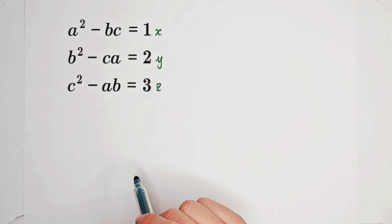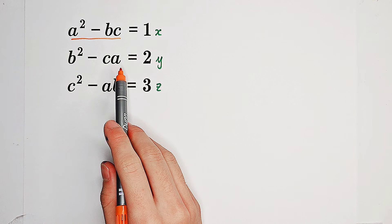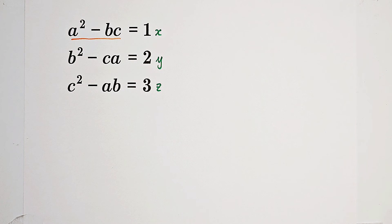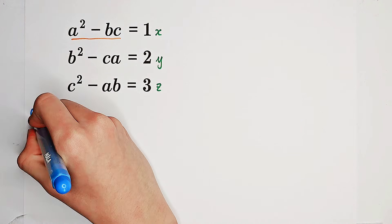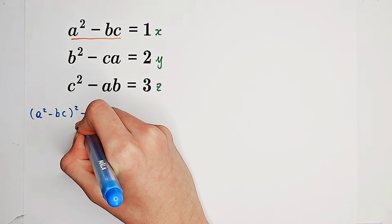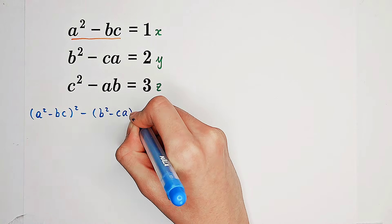So firstly, what shall we do? Notice that the form of our left-hand sides are quite interesting — a squared minus bc. Now, let's firstly square the first equation and then subtract the product of the other two from it. We can get x squared minus y times z on the right-hand side, which has the same form as our left-hand sides.